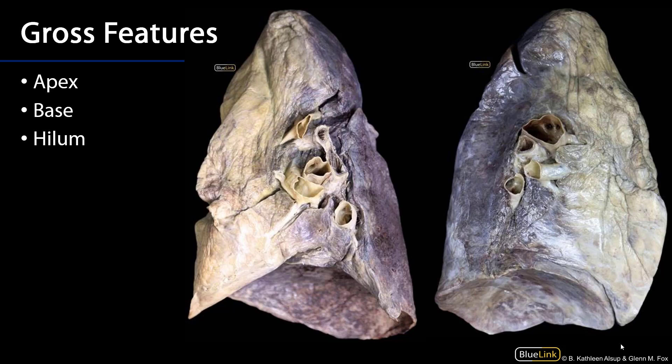As we look at the medial surfaces of these lungs, we can see that each has a hilum, and the hilum of the lung is what conducts the root of the lung in and out.